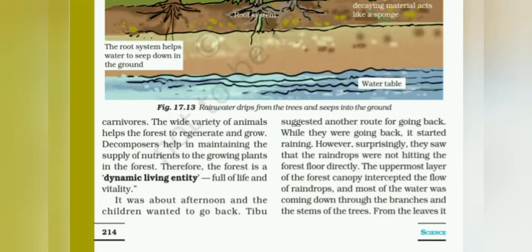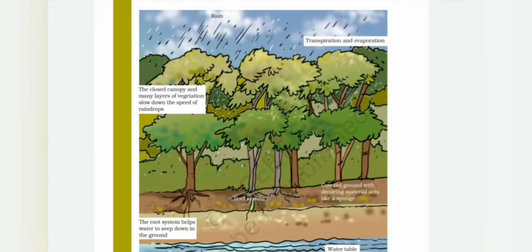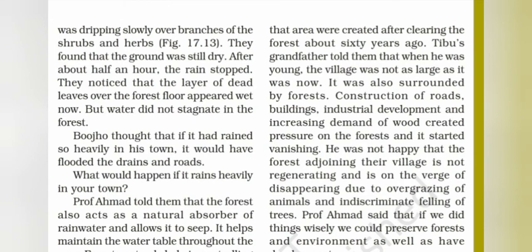If rain comes into the forest, surprisingly, the raindrops do not hit the forest floor directly. The uppermost layer, the forest canopy, intercepts the flow of raindrops, and most of the water comes down through the branches and stems of the trees. The force of the rain is reduced, and from the leaves it drips slowly over branches of the shrubs and herbs.